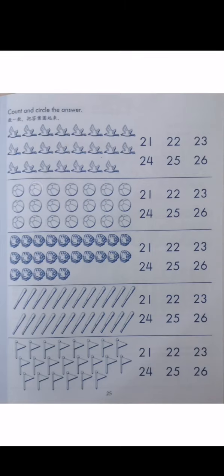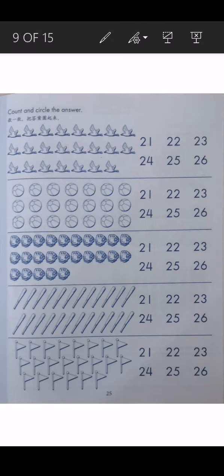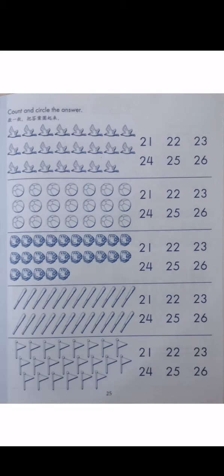Let's look at the next one. 1, 2, 3, 4, 5, 6, 7, 8, 9, 10, 11, 12, 13, 14, 15, 16, 17, 18, 19, 20, 21. Children, please circle 21. The next three, I want you to count and circle yourself. Can you do it?